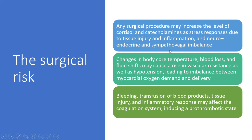Why is surgical risk important? Because any surgical procedure may increase cortisol and catecholamines as a stress response due to tissue injury, inflammation, and neuroendocrine and sympathovagal imbalance. During surgery there are changes in core body temperature, blood loss, and fluid shifts that may cause rises in vascular resistance or hypotension, leading to an imbalance between myocardial oxygen demand and delivery. Additionally, bleeding, blood transfusion, tissue injury, and inflammatory response may lead to prothrombotic states, all of which may aggravate the patient's cardiological condition.